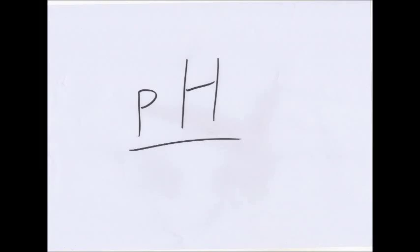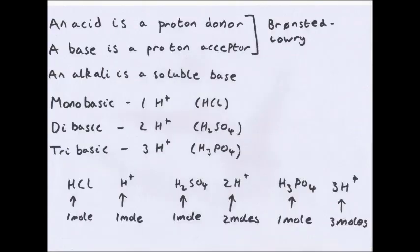Welcome to this video on pH. We use the Brønsted-Lowry definitions: an acid is a proton donor, so it releases an H+ ion, and a base is a proton acceptor. An alkali is a soluble base. There are different types of acids: monobasic, dibasic, and tribasic.